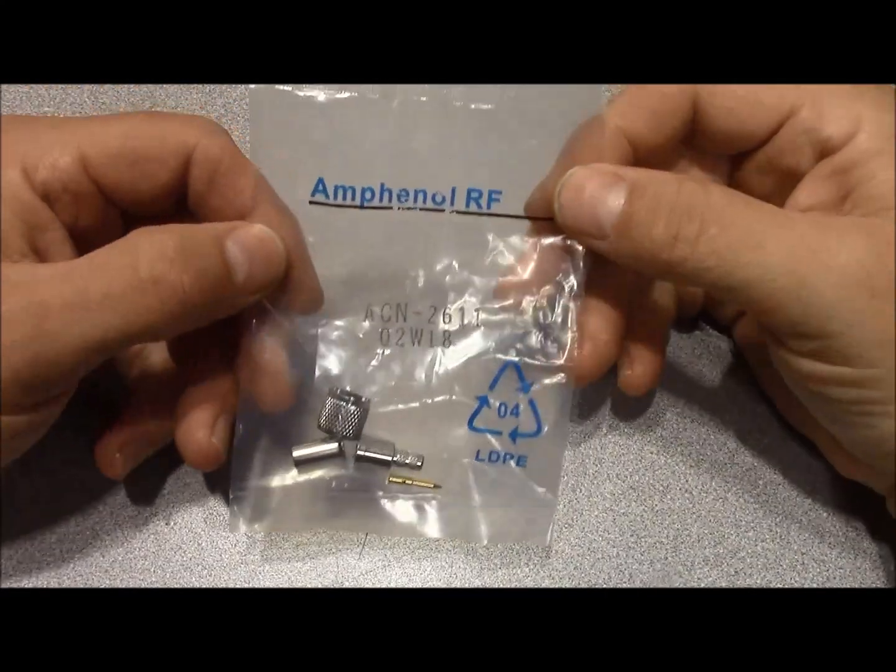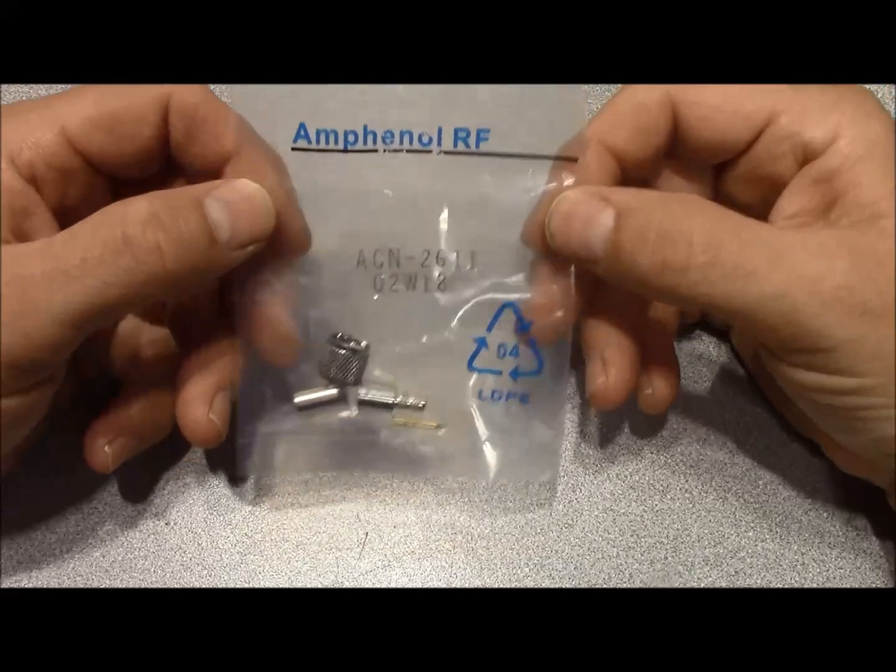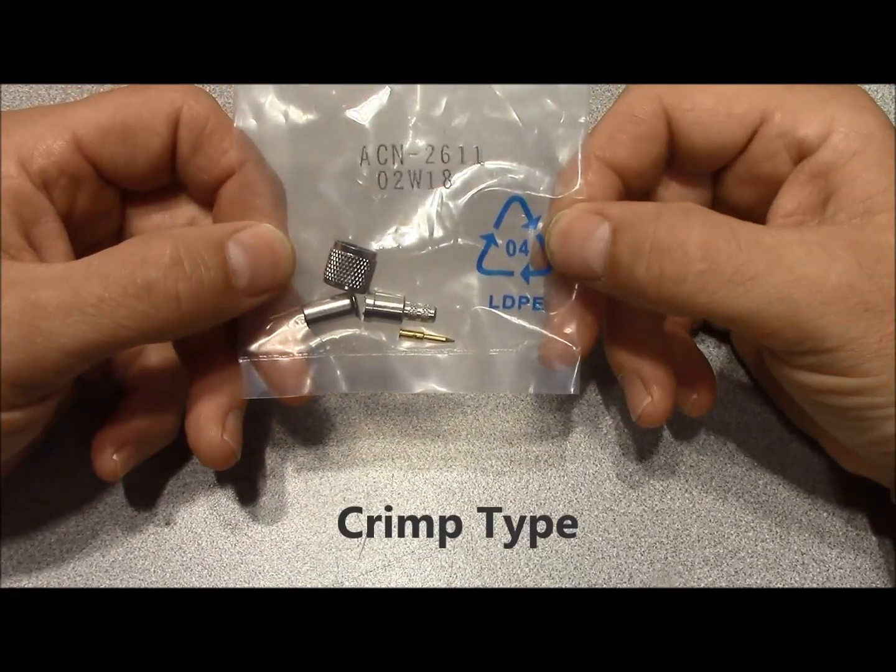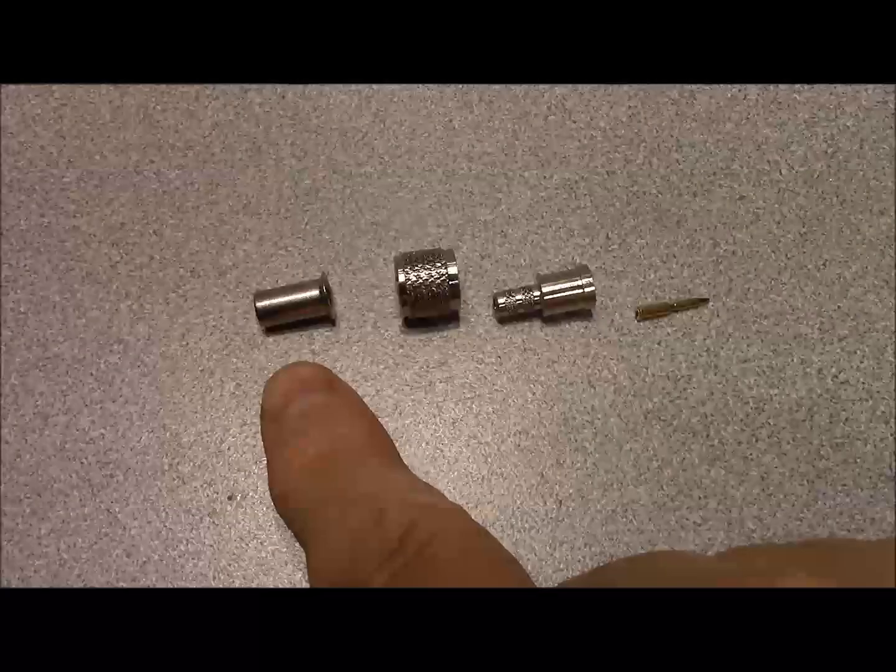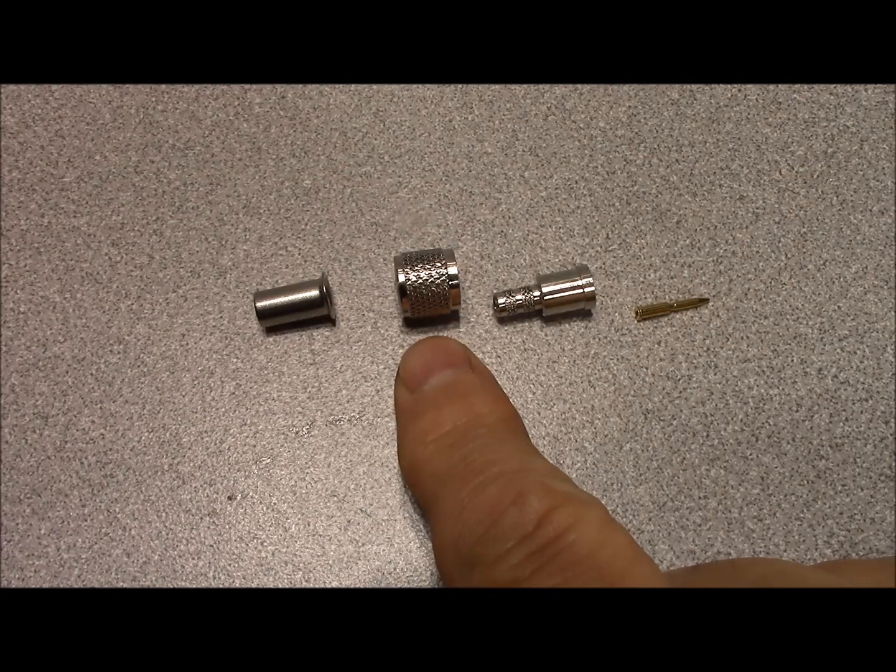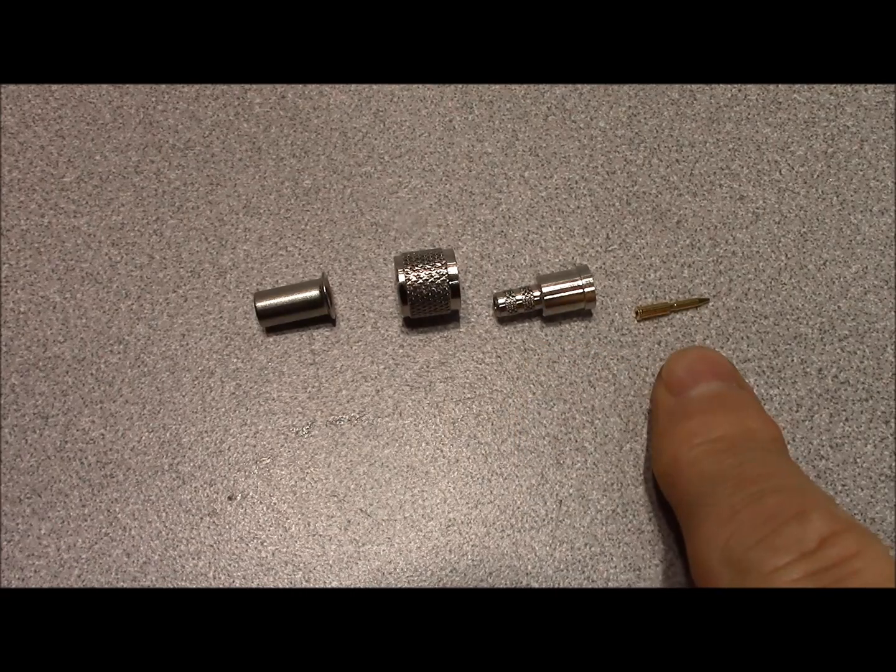Here's an example of a garden variety RF connector for RG58 size cable. This is a mini UHF connector. You have your ferrule, your connector shell, your connector body, and your center pin.